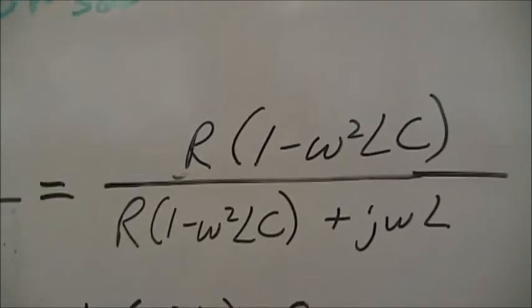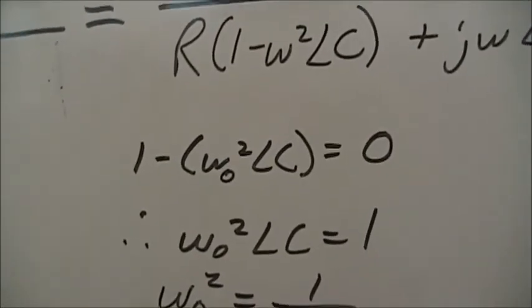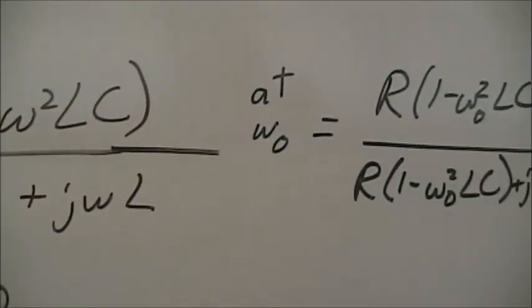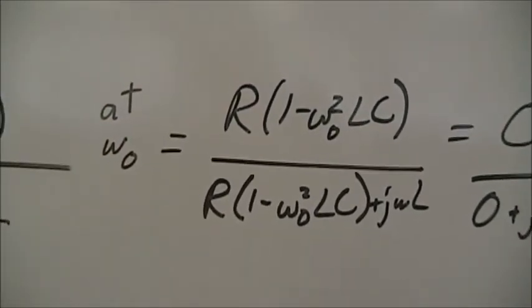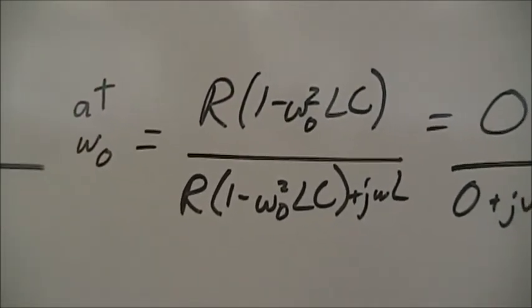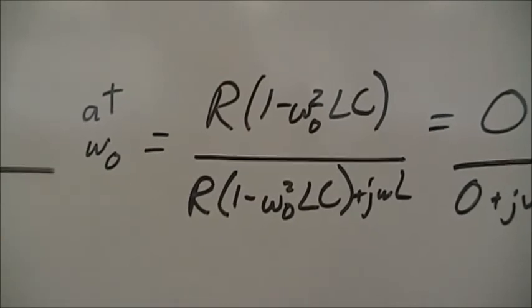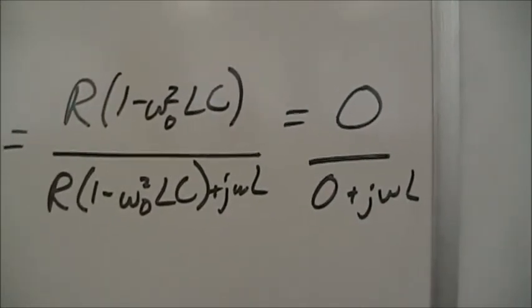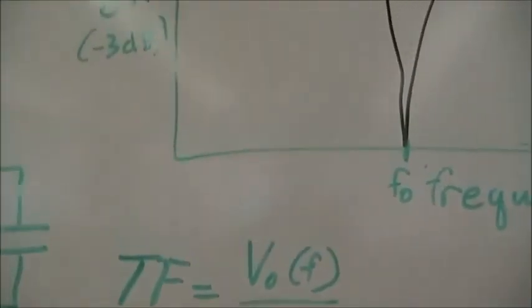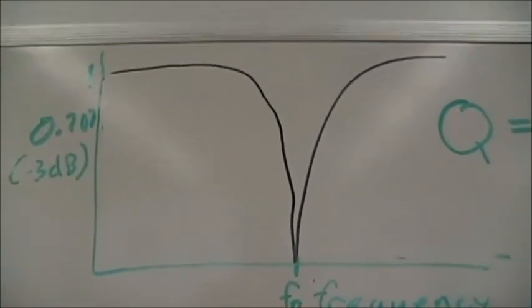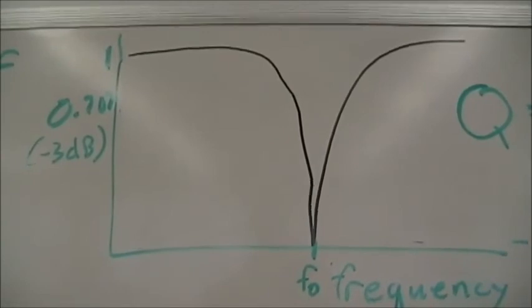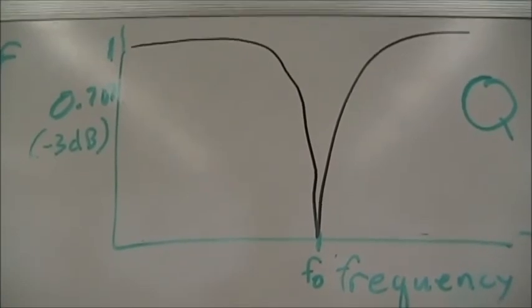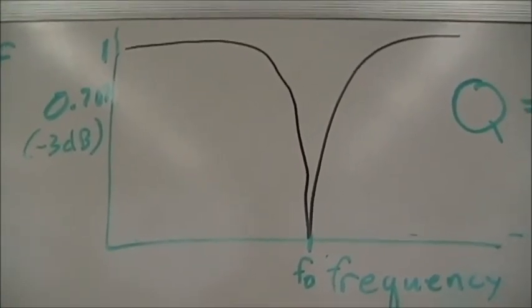So at resonance, 1 minus ω²LC goes to 0. Same resonant frequency as the series case. But the numerator then becomes R(1 minus ω²LC), and the denominator has the R same real term plus jωL. And of course that will go to 0. So in the data plot we see something like this. Instead of peaking up to a value of 1, it notches down to a value of 0 at the resonant frequency. And so we'll take these measurements with the two R values to see the different responses, first with 300 ohms and then with 30 ohms.